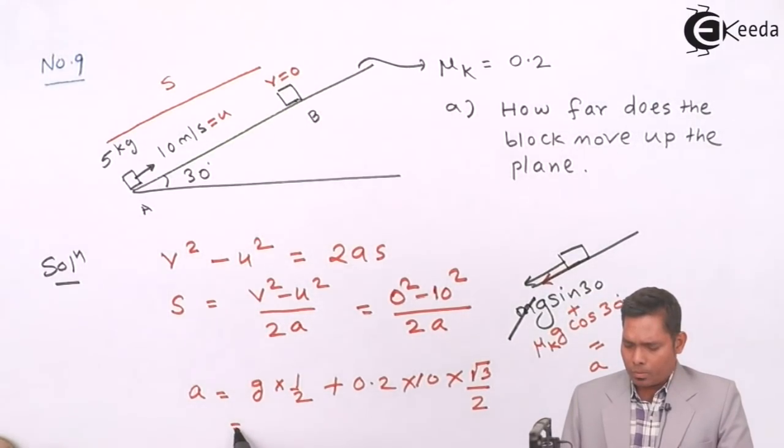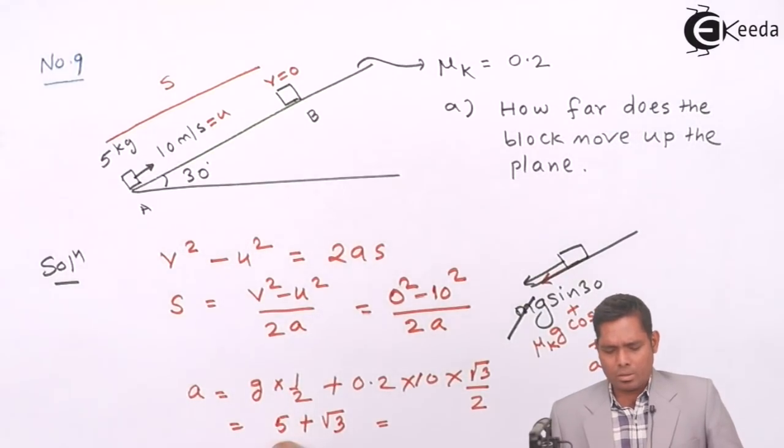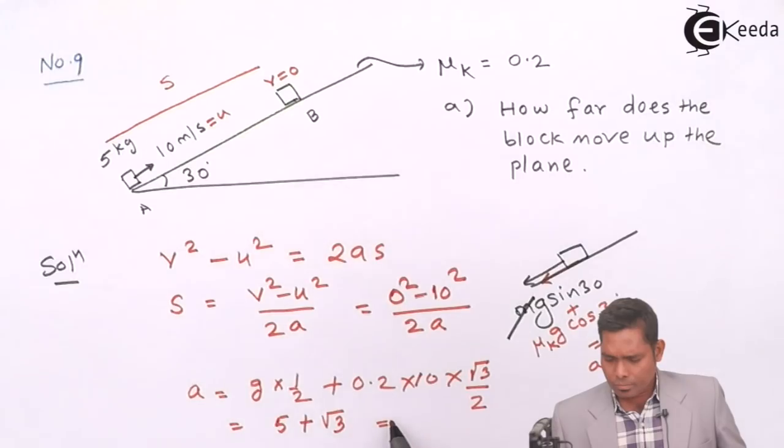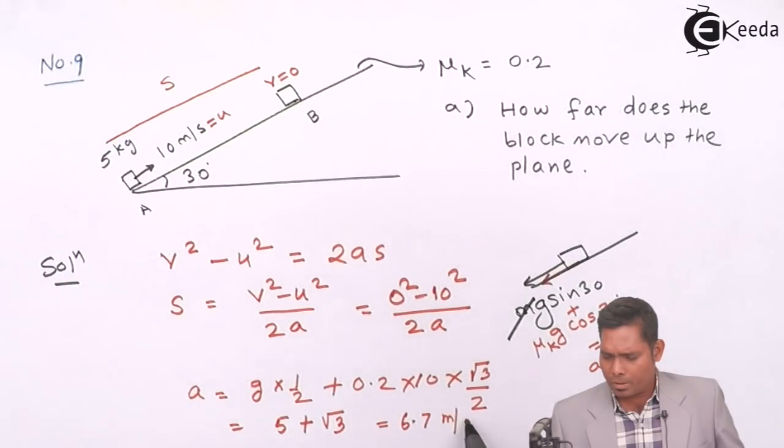So what is A? Let us find that A first. A is g, which is obviously I will take 10. So g sin θ which is 10 times 1/2, that's 5, plus μk is 0.2, which is again g, 10 into cos 30 is √3/2. This is 5 plus √3. √3 is 1.73, so I will write 6.73. So acceleration I will write 6.73, approximately 6.7 meters per second squared.